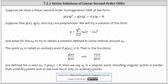Suppose that p of x, q of x, and r of x are polynomials. We try a power series solution: y equals the sum from k equals zero to infinity of a sub k times the kth power of the difference of x and x sub zero. We solve for a sub k to obtain a solution defined in some interval around x sub zero. The point x sub zero is called an ordinary point if p of x sub zero doesn't equal zero — that is, the functions q of x divided by p of x and r of x divided by p of x are defined for x near x sub zero.